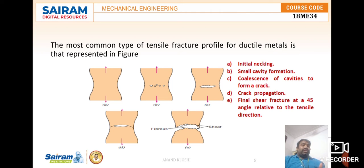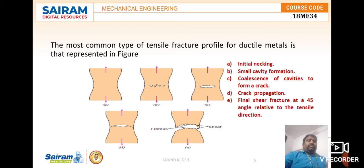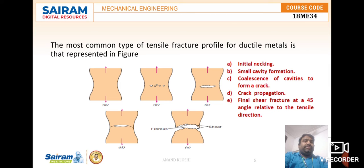Once the neck forms, the next stage is cavity formation, also called micro-crack formation. Small cavities form at the neck region, as shown in the figure. These cavities develop as a result of stress and are caused by small particles of impurities or other discontinuities that separate from the metal matrix.